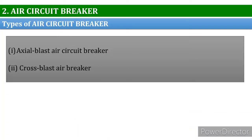Air circuit breakers have three major types: the first is the axial blast air circuit breaker, the second is the cross blast circuit breaker, and the third is the radial blast type. We will discuss the first two main types in detail.